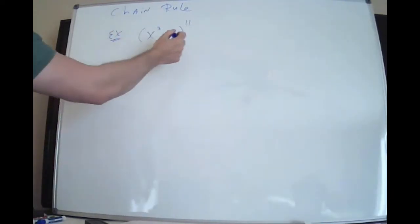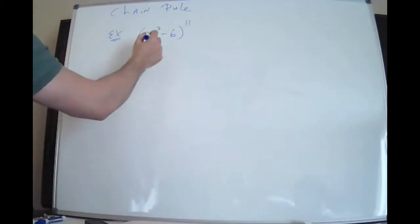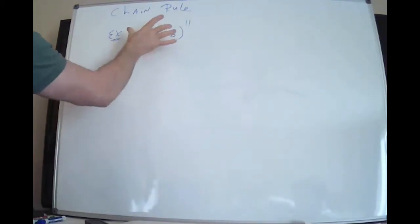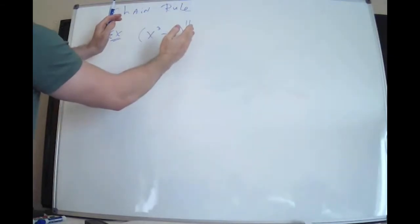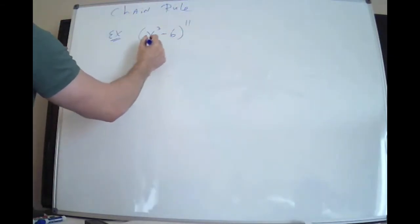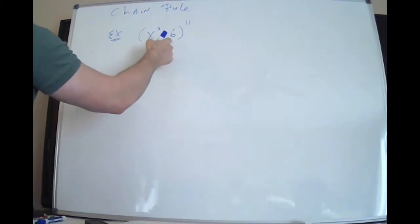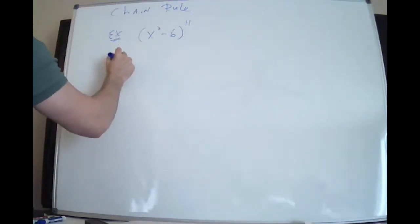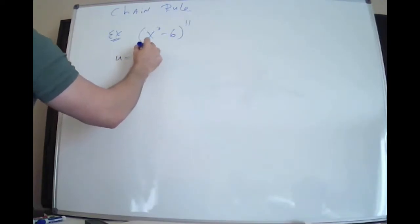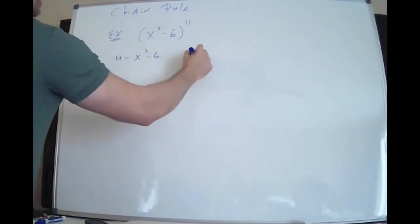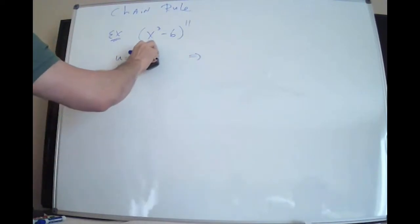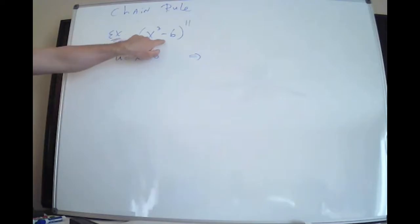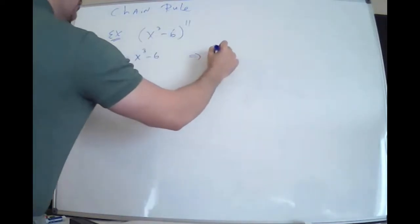This is the first chain rule example. Remember that this function is made up of an f(x) on the outside, which is something to the 11th, and then g(x) is the inside function — the one you're plugging into f. We're going to call that u. So wherever you see x³ minus 6, you put a u.